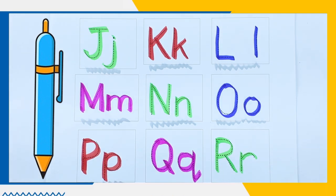P, it's a red color. P for parrot. Which alphabet is this? Yes, right. It's a Q, Q for queen with pink color.